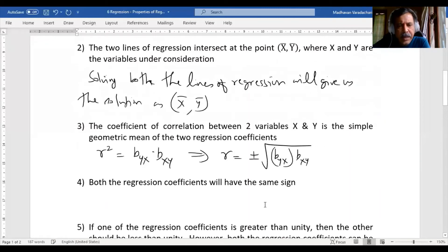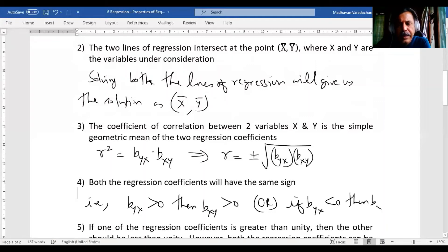One thing is clear: both the regression coefficients will have the same sign. Otherwise what will happen? Inside the square root it will become negative, which is not possible—it will become an imaginary number. So definitely if b_yx is positive then b_xy also should be positive.